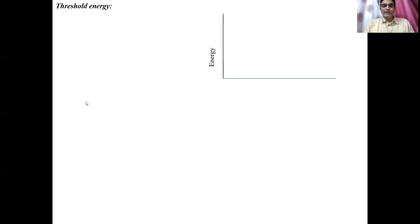In today's lecture we will discuss the basics of collision theory of reaction rate. Let's start with some basic definitions involved in this theory. The first definition is threshold energy. When we draw an energy level diagram, we have two axes: along the y-axis energy is taken, and along the x-axis the progress of the reaction or time is taken.